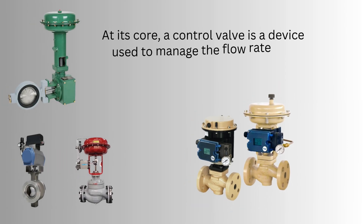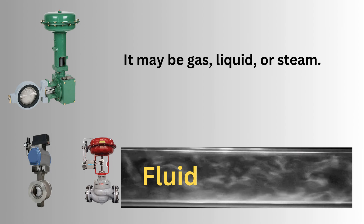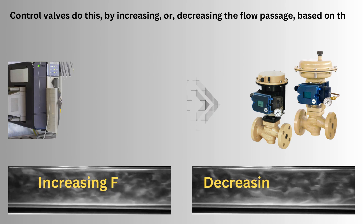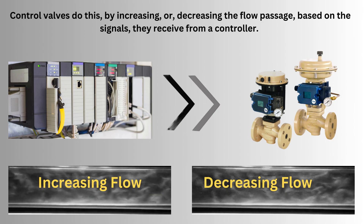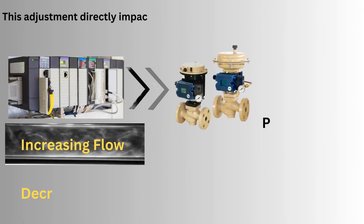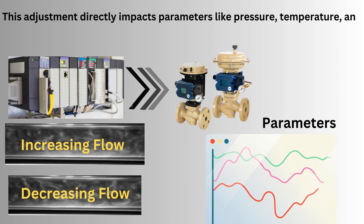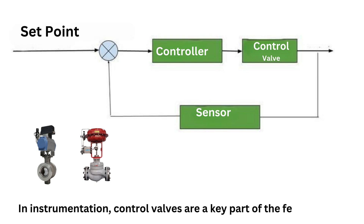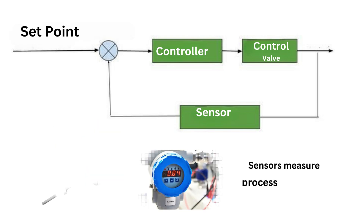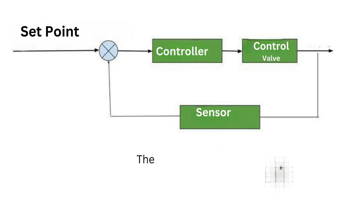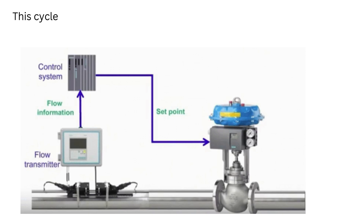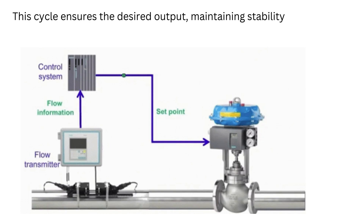At its core, a control valve is a device used to manage the flow rate of fluids — it may be gas, liquid, or steam. Control valves do this by increasing or decreasing the flow passage based on the signals they receive from a controller. This adjustment directly impacts parameters like pressure, temperature, and liquid level. In instrumentation, control valves are a key part of the feedback loop: sensors measure process conditions, the controller sends a signal, and the valve adjusts accordingly. This cycle ensures the desired output, maintaining stability in the system.